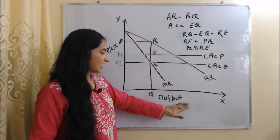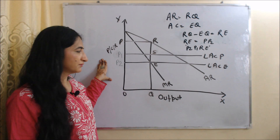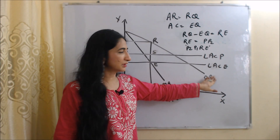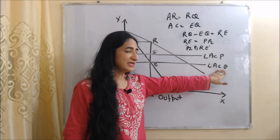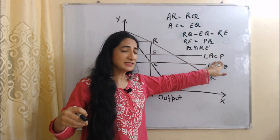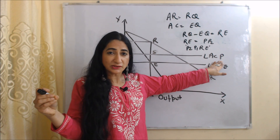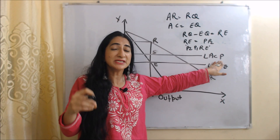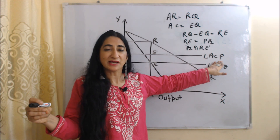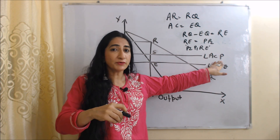In this diagram, on the x-axis we have output and on the y-axis we have price, cost, and revenue. MR is the marginal revenue curve, AR is the average revenue curve, LAC_E is the long run average cost of the existing firm, and LAC_P is the long run average cost of potential entrants. Potential entrants are those new firms who will enter the market to see the increased profit of the existing firm.